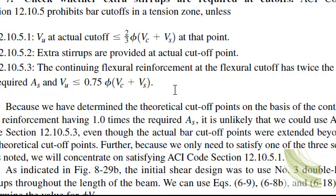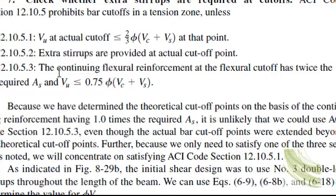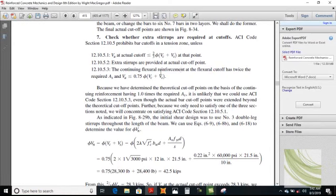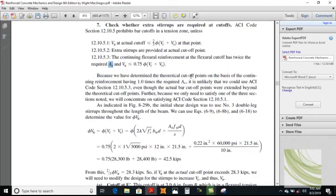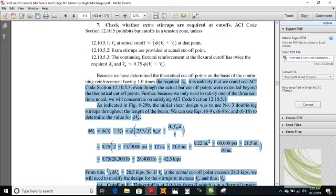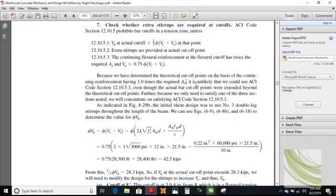The third criterion: Vu should be less than or equal to 0.75 times phi Vc plus Vs at the cut-off point. Calculate the shear and check it with this value — if it is less, okay. If not, you cannot cut the bars. The continuing flexure reinforcement at the flexure cut-off has twice the required As, meaning the two bars give a value of As two times more than As required.